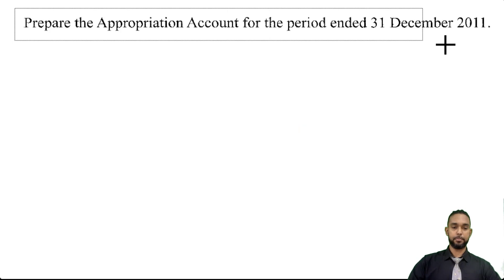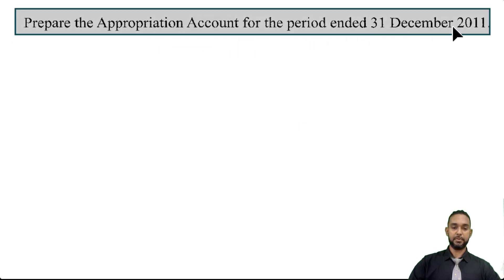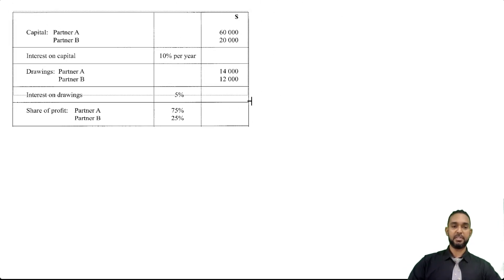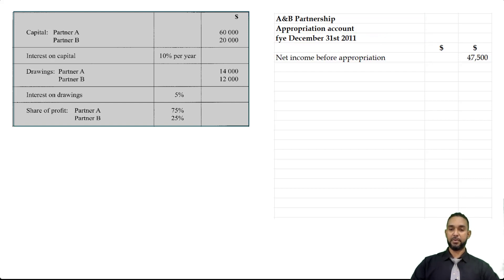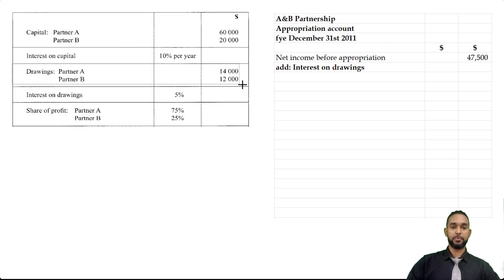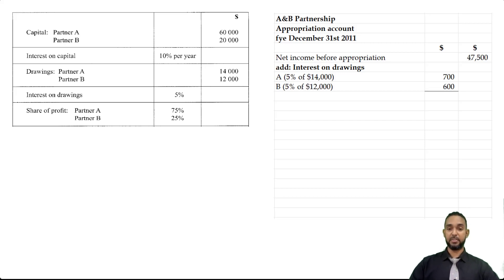Part C asks us to prepare the appropriation account for the period ended 31st December 2011. The heading is: A and B Partnership Appropriation Account, FYE 31st December 2011. We start with the $47,500 net income before appropriation. The first thing we do is add interest on drawings: 5% of $14,000 for partner A gives $700, and 5% of $12,000 for partner B gives $600. Totaling $700 and $600 gives $1,300, which we add to $47,500 to get $48,800.